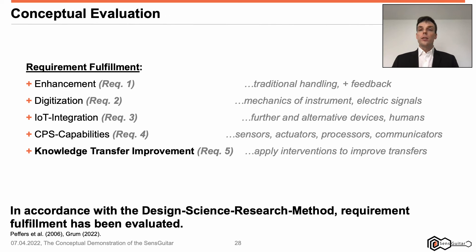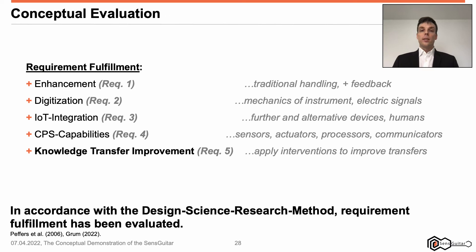Fifth, knowledge transfer improvement: we specified that the artifact needs to improve knowledge transfers. We have seen that the sense guitar implements interventions to improve task complexity or knowledge stickiness by reduction, and competence by increase, in order to raise knowledge transfer speed. As an interim conclusion, we can identify the requirement fulfillment by the conceptual demonstration and the artifact designed.